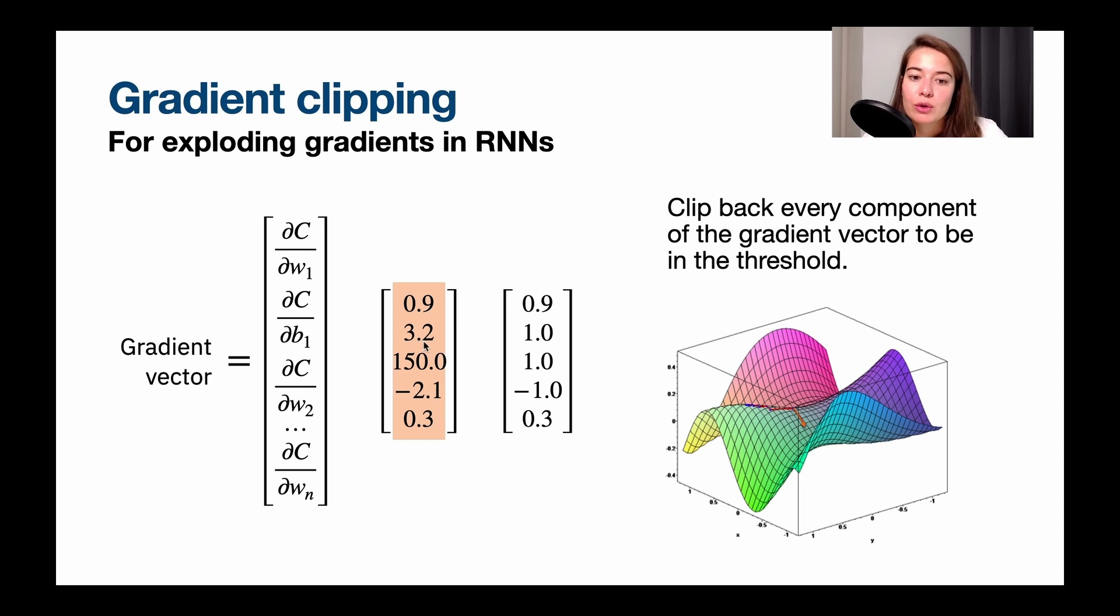Because it was going to say, okay, 0.9 this way, 3.2 that way, 150 that way. But what happened now, because I changed the values, I didn't keep the scale or the ratio they had between them. Now I'm going to go in a completely different direction. This might even be completely off. So that's why it doesn't feel like it's the right direction to go.